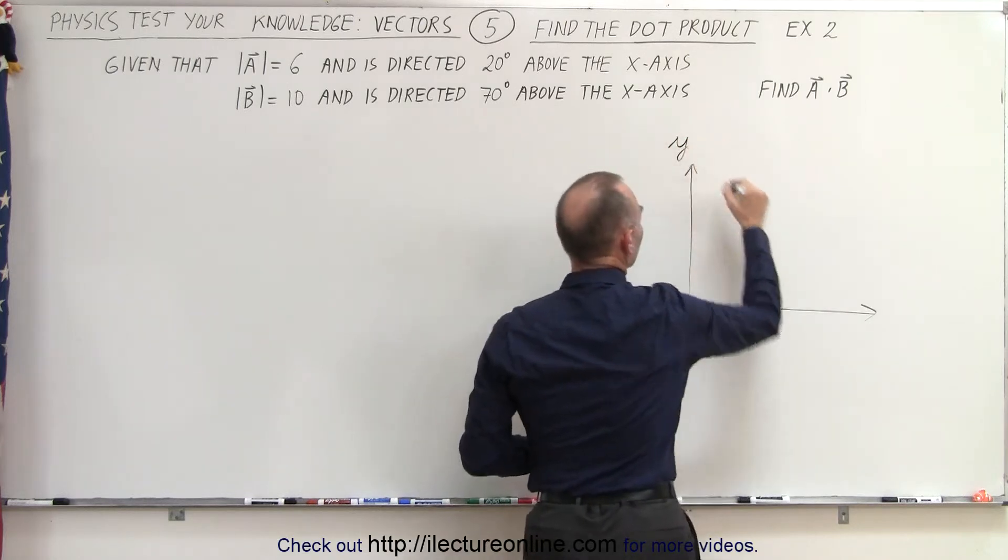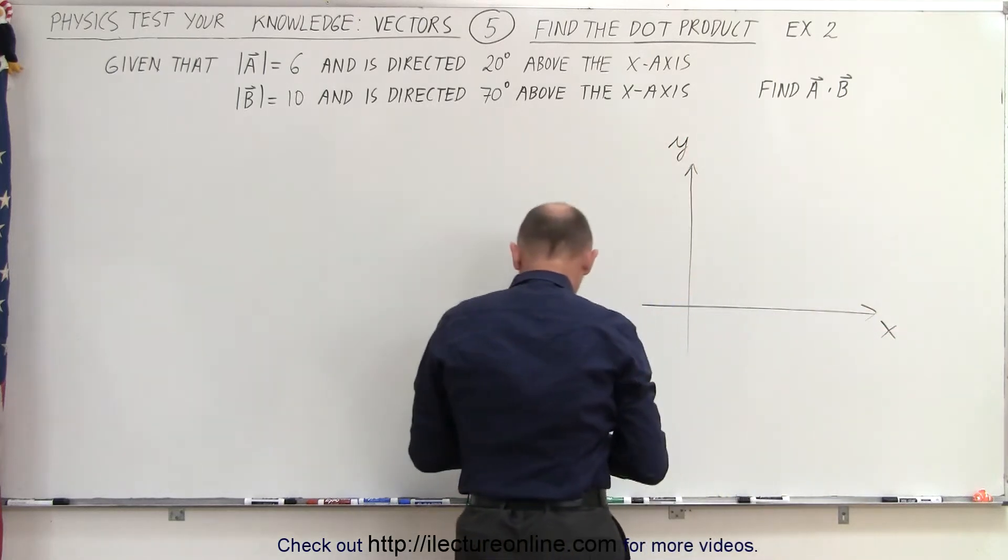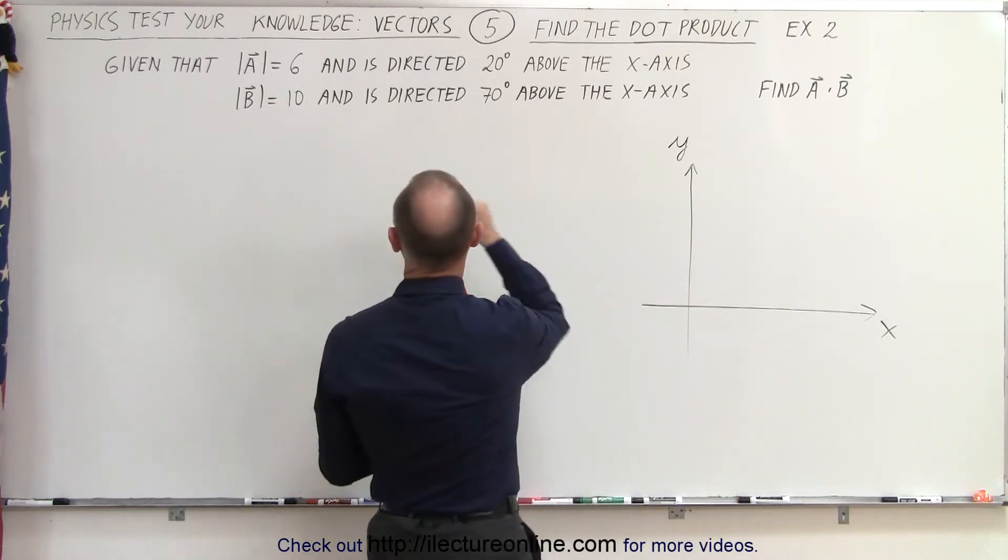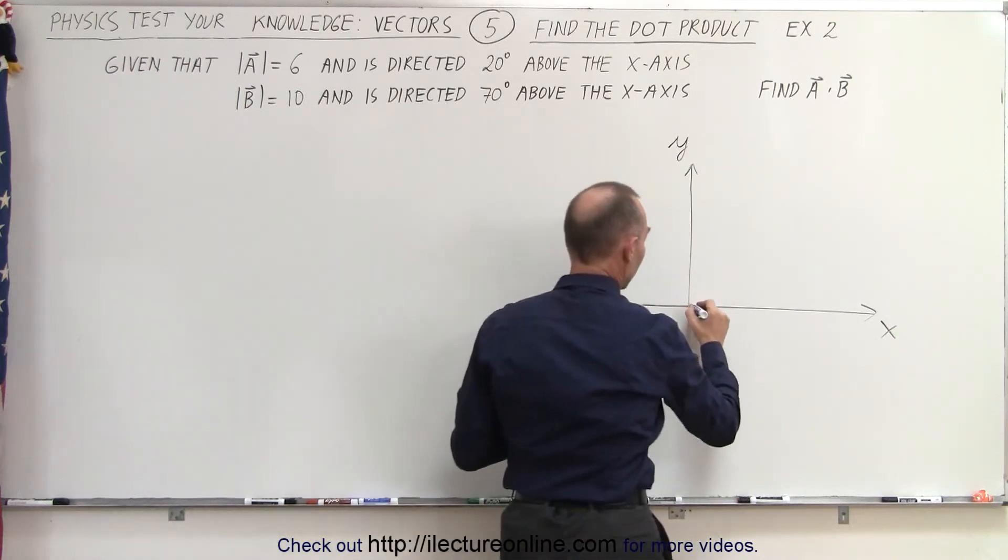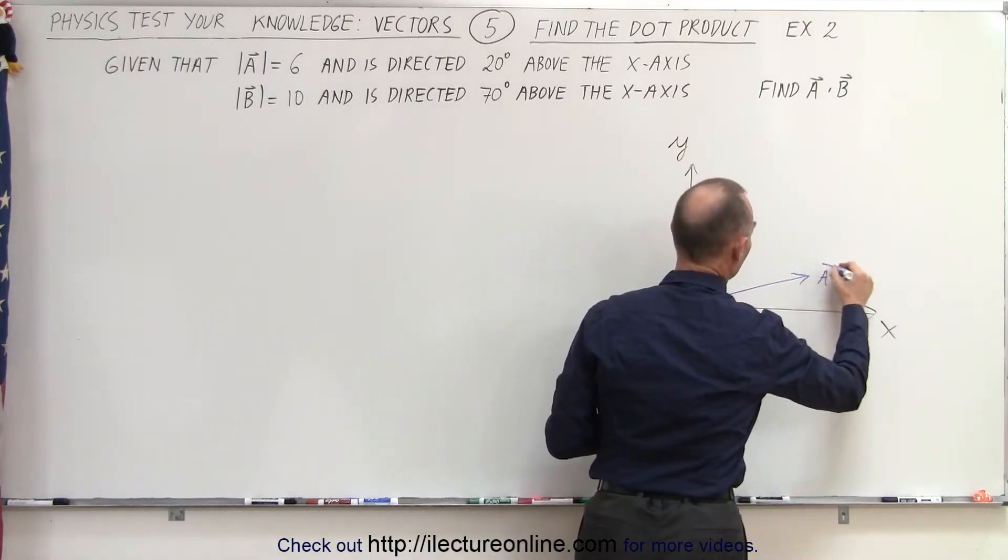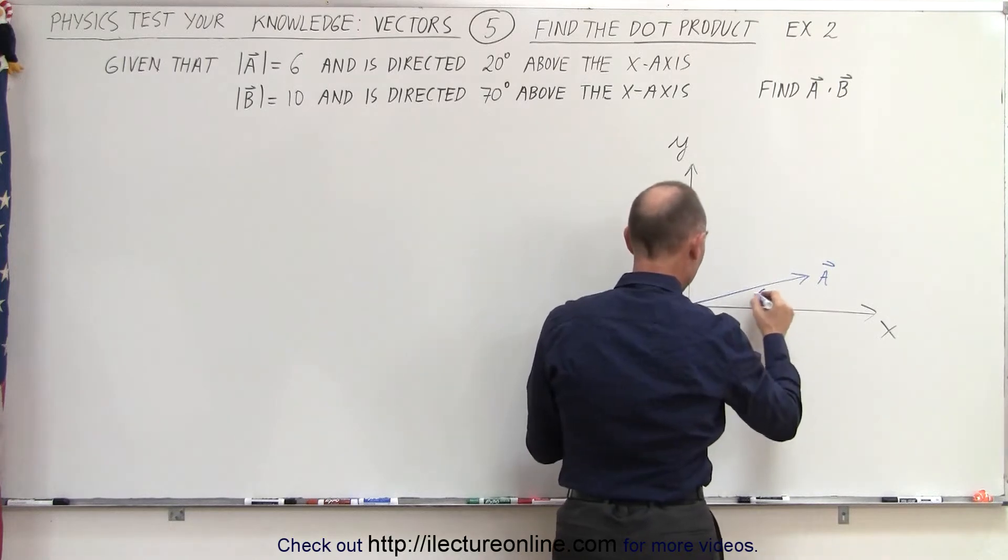So let's draw our first vector. It's at an angle of 20 degrees above the x-axis with a magnitude of 6, kind of like this. So here's our A vector. It has a magnitude of 6 and an angle of 20 degrees.